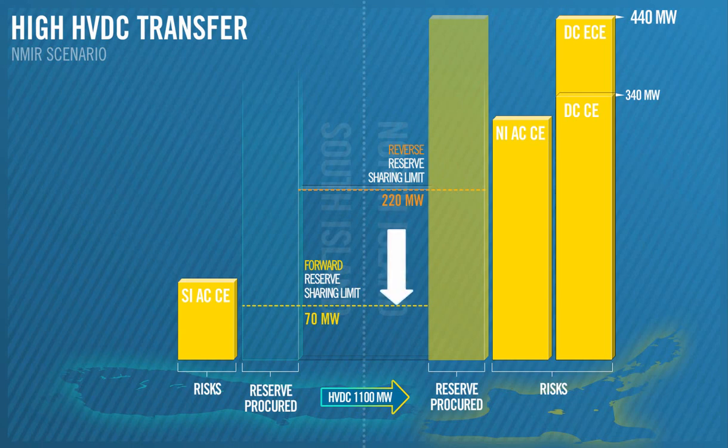In this case, the reduced forward sharing limit has no impact, as no FUR is increasing.